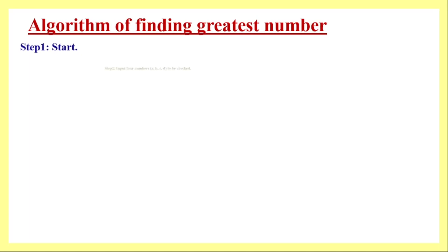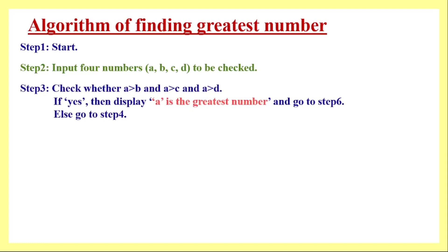In the algorithm, the first step is Start. Then we input all four numbers. The first logic check: we check whether A (number one) is greater than B (number two), and A is greater than C, and A is greater than D. If yes, we conclude that A is the greatest number, display the message, and go to step six which is End. If this logic fails, we proceed to the next step.